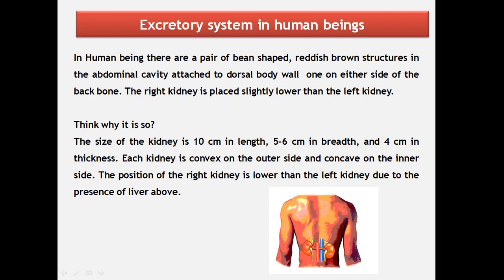In humans there are a pair of bean-shaped, reddish-brown structures in the abdominal cavity. We have two cavities: the thoracic cavity where the rib cage, lungs, and heart are present, and the abdominal cavity below where the stomach and intestines are present. The kidneys are bean-shaped and reddish-brown in color. They are located in the abdominal cavity, attached to the dorsal body wall on either side of the backbone - the vertebral column.